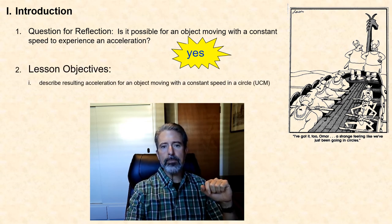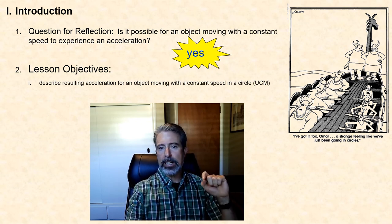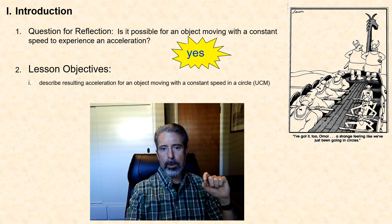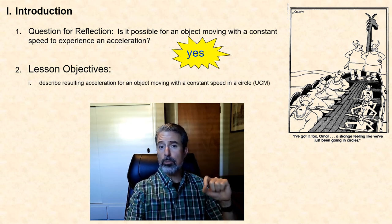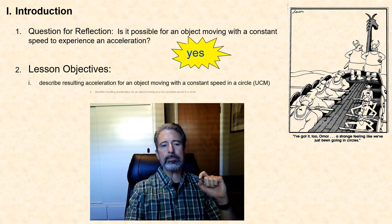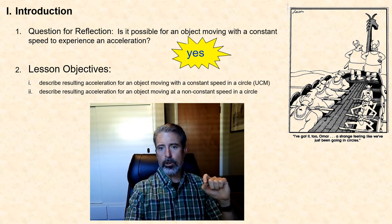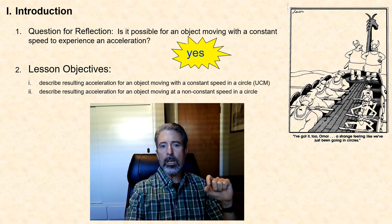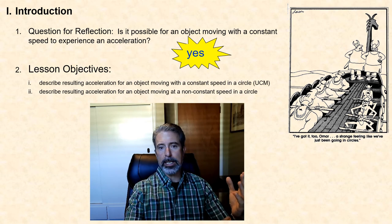Today we are going to start by taking a look at the kinematics of a special type of circular motion — what we call uniform circular motion, or UCM for short. This is the case where objects move in circles at a constant speed. We will then generalize our discussion to include the case where objects move at a changing speed while still moving in a circular path.